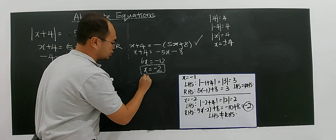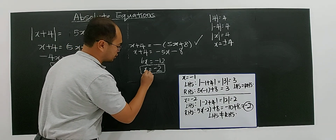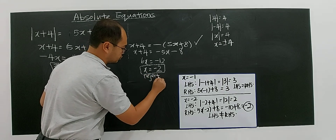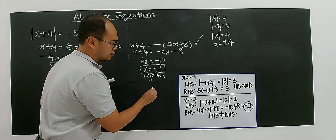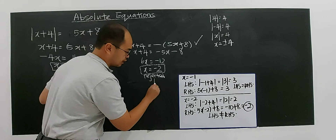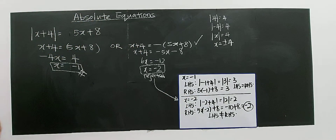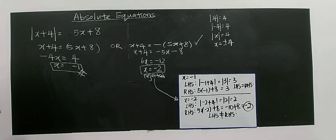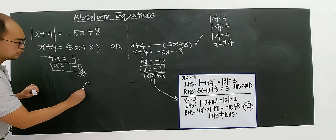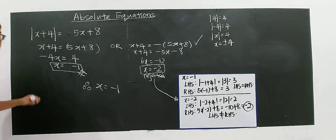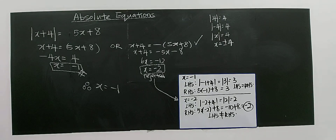Reject. You must tell your reason why you reject the solution. Therefore, there is only one solution, which is x equals to negative 1. Very simple. This is the second question.